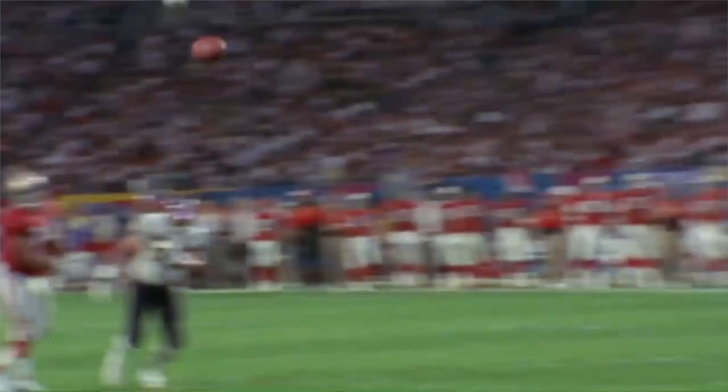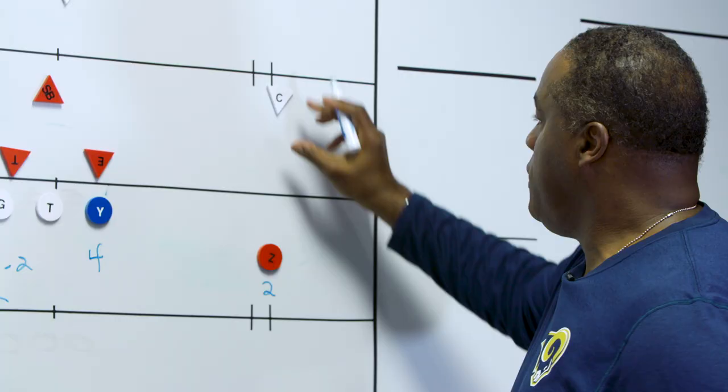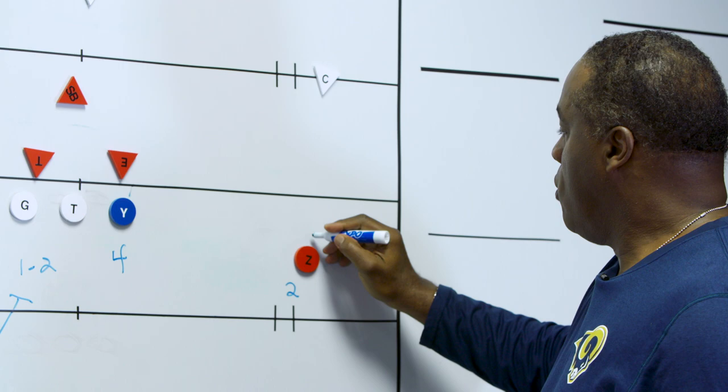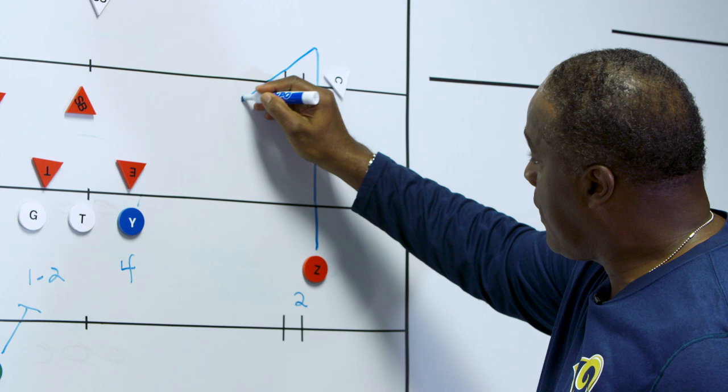The 22ZN works like this: he's going to push up to a depth of 12 yards, then he's going to plant and work right back to the quarterback. So if he has zone coverage, he's driving up the field, planting at 12, and coming back to the quarterback.